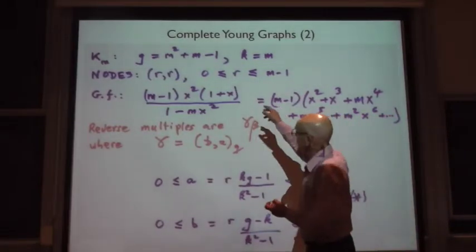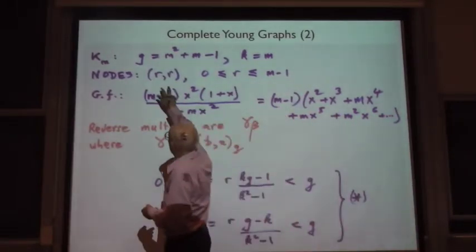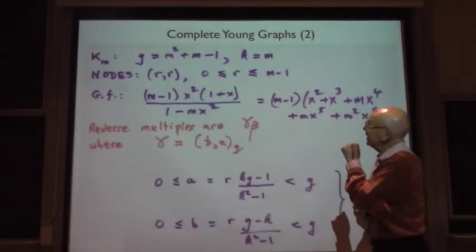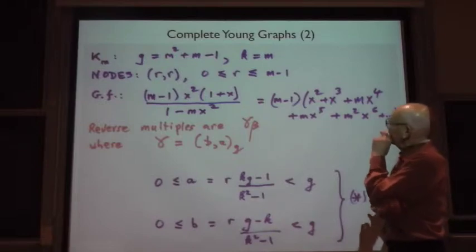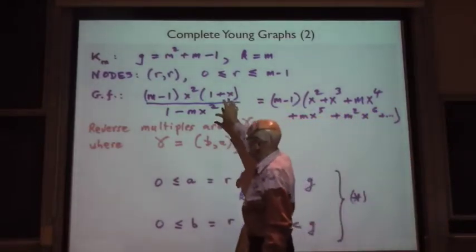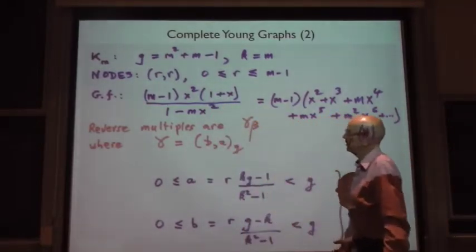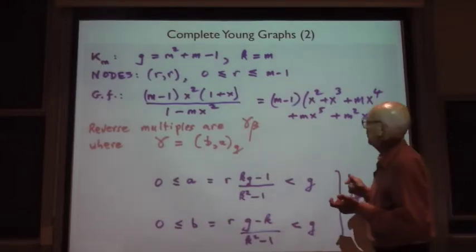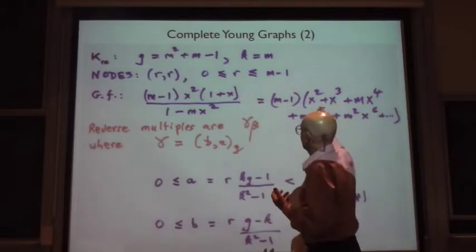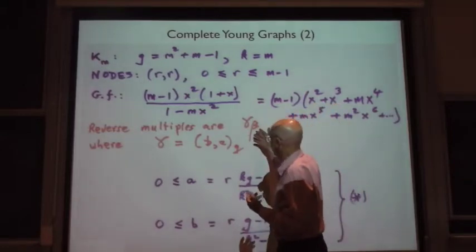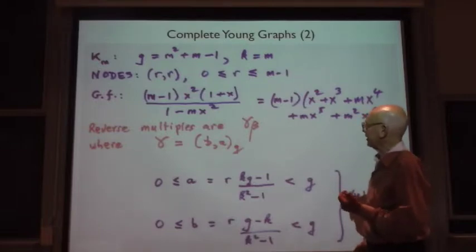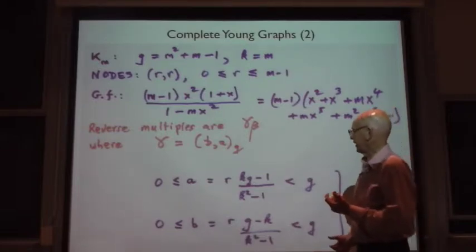And the nodes, the node labels, are all pairs RR. They have to be identical because they're all going to be even pivot nodes. You can work out what the generating function is because the adjacency matrix is just a block, a solid block of X squared. And you can work out what the reverse multiples are. So this is a case where it's actually not so difficult to analyze everything.